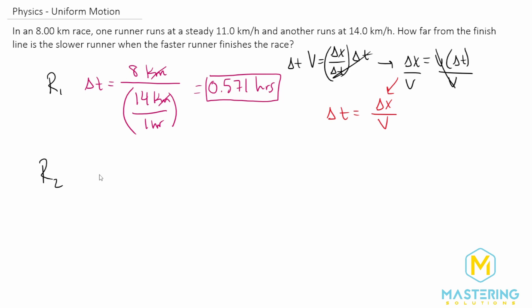So R2 for the slower runner, we're going to be finding the delta x, which we already isolated up here. So delta x, or where were they, equals the velocity times the change in time. So now we're going to use their velocity. So we have their velocity was 11 kilometers per hour, and then the time that we're trying to figure out where they're at was the 0.571 hours.